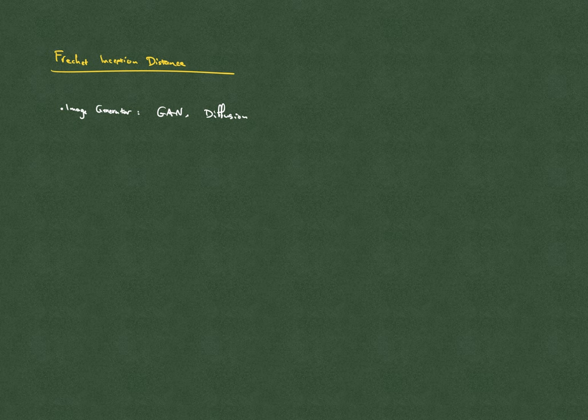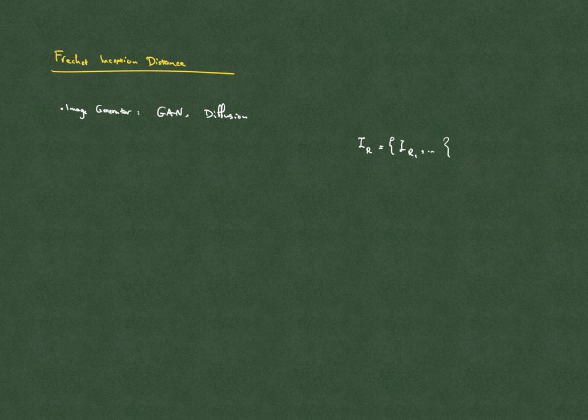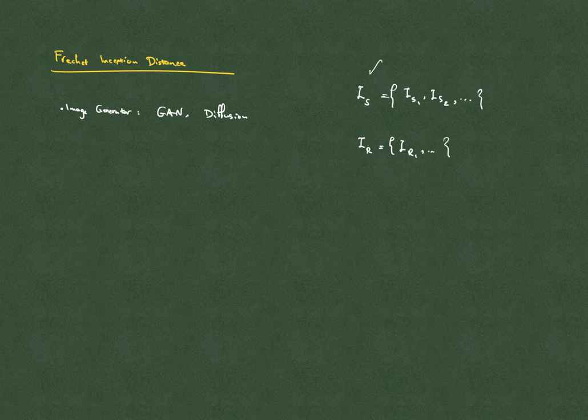Consider that you have a black box image generator, which could be a GAN or generative adversarial network, or a model based on diffusion, and through that you will generate a bunch of synthetic images. You will have a set of synthetic images, let's call it IS, and a set of real images IR1 through the end. The ultimate goal is to evaluate how well these images are generated in the synthetic set, and how realistic they seem to a human inspector.